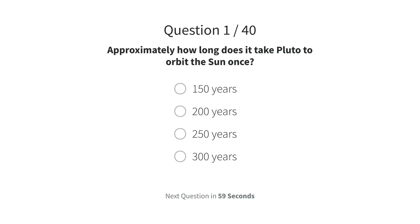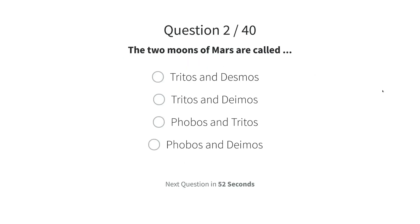You will see the first question. You can choose your answer by clicking one of the four possibilities. Below, you can see the time that is left to answer the question. You can change your answer within this time. The page will automatically proceed to the next question. You cannot skip or go back to any question. Never refresh the page yourself — this might cause technical issues.